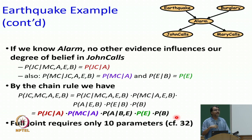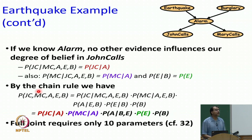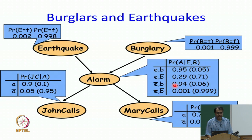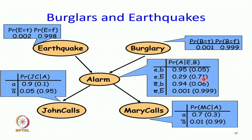If you think about the graph, what we have done is simply multiplied all the CPTs — the conditional probability tables. For a given joint query, suppose I want to know the probability of John, not Mary, no alarm, earthquake, no burglary. I will say: earthquake 0.002, no burglary 0.999, no alarm given earthquake and no burglary is 0.71, John given no alarm is 0.05, not Mary given no alarm is 0.99. I multiply all these 5 numbers and that gives me the joint probability for this particular state.